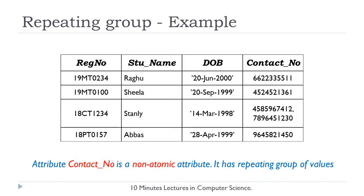In this example, the attribute contact number is a multi-valued attribute because it has more than one contact number for one or more records. Due to these multiple values, contact number is a non-atomic attribute. Hence this table is not in first normal form.